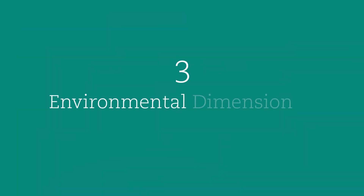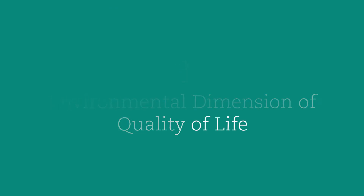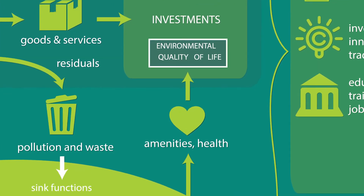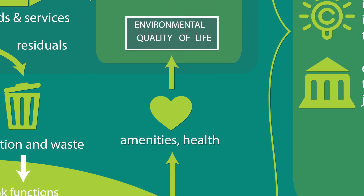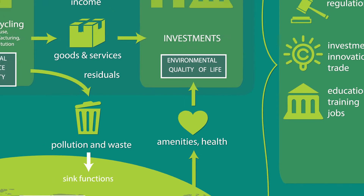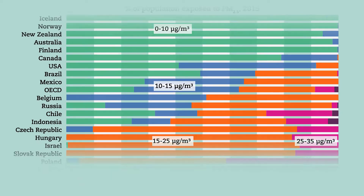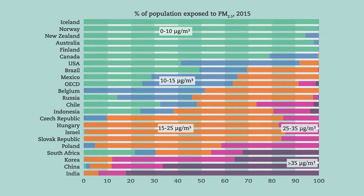The third group of data shows the Environmental Dimension of Quality of Life. These indicators reflect how environmental conditions and risks interact with the quality of life of people. The indicators in this group can show the extent to which income growth is accompanied by a rise in well-being. For example, we see that human exposure to air pollution by fine particulates is still dangerously high in most OECD countries.